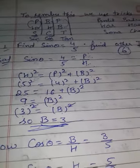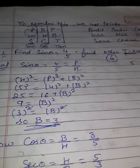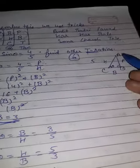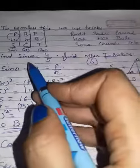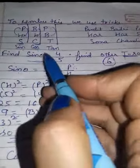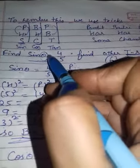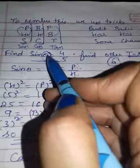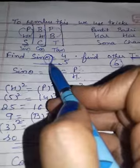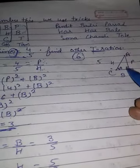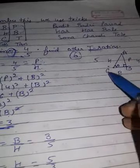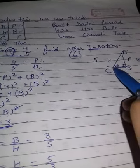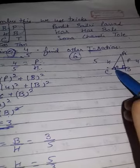Now you have all the sides of the right-angled triangle: P is 4, H is 5, B is 3. I have made a right-angled triangle — this is your reference angle theta. Where the reference angle lies, that will work as base. You can take any names; I have taken ABC.